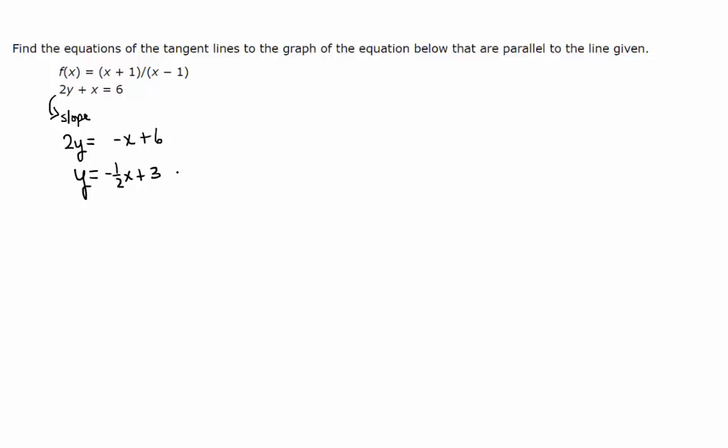So this is just some line, right? Just some line. But what we care about is what it means to be parallel to this line. So the slope of this line is negative 1 half.